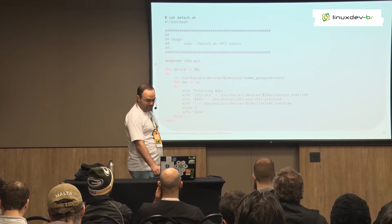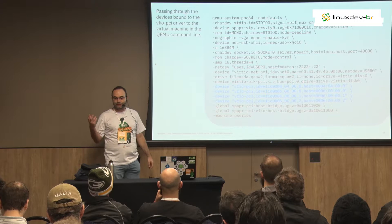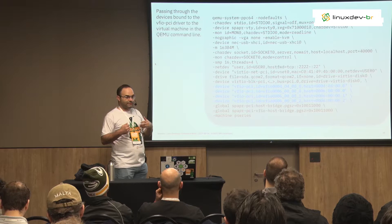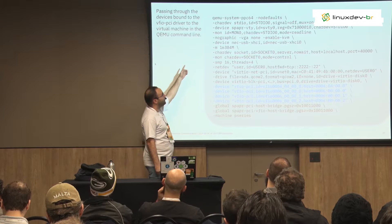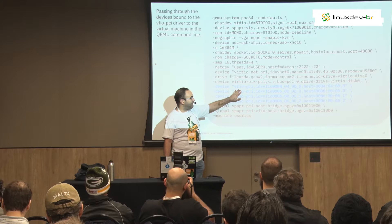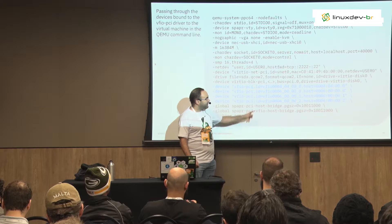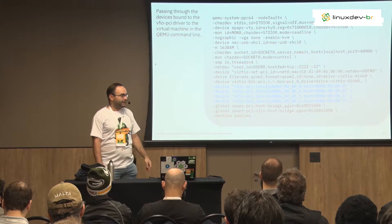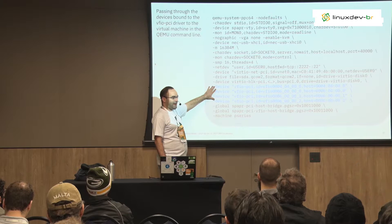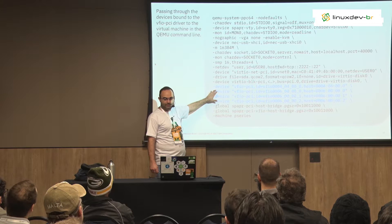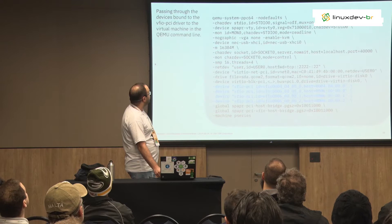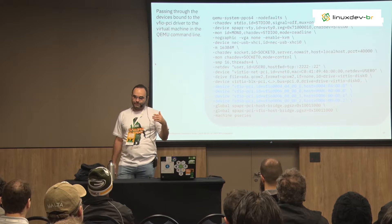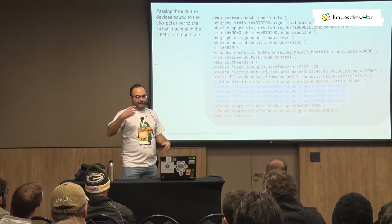Here's a short script created by a teammate, Ziviani, that shows how to do that. Basically, it mod-probes the VFIO driver, looks for the device passed on the command line, finds all other devices in the same IOMMU group, and for each one does a driver override to VFIO and binds the device to VFIO. This unbinds the device from its previous driver and binds it to the VFIO driver for all devices in the IOMMU group. After doing that, you can just assign the device to a process. This can be tricky — you can forget something — so it's easy to make mistakes on the QEMU command line.